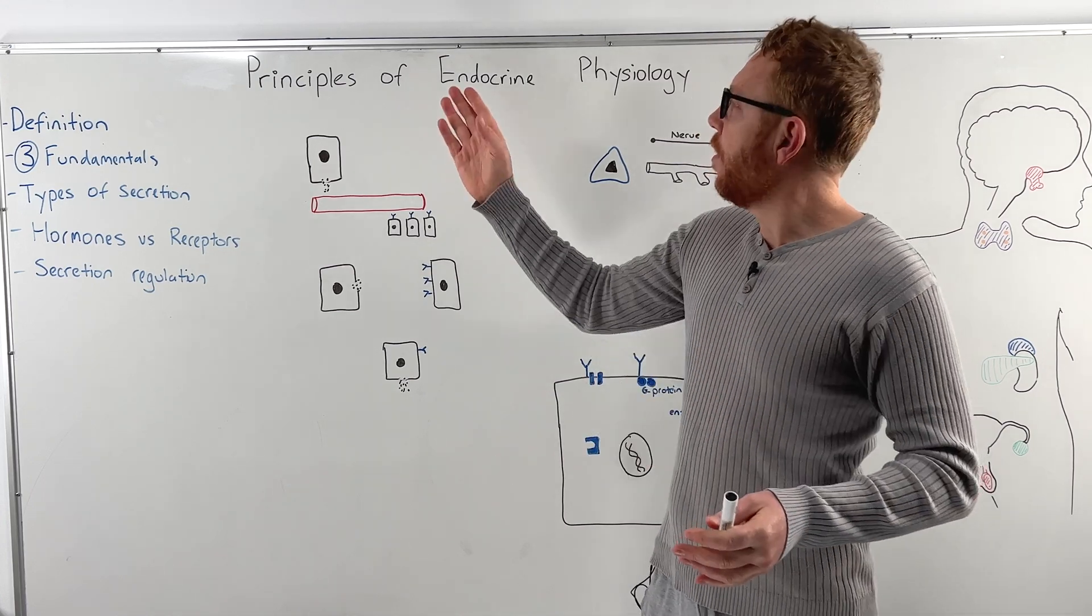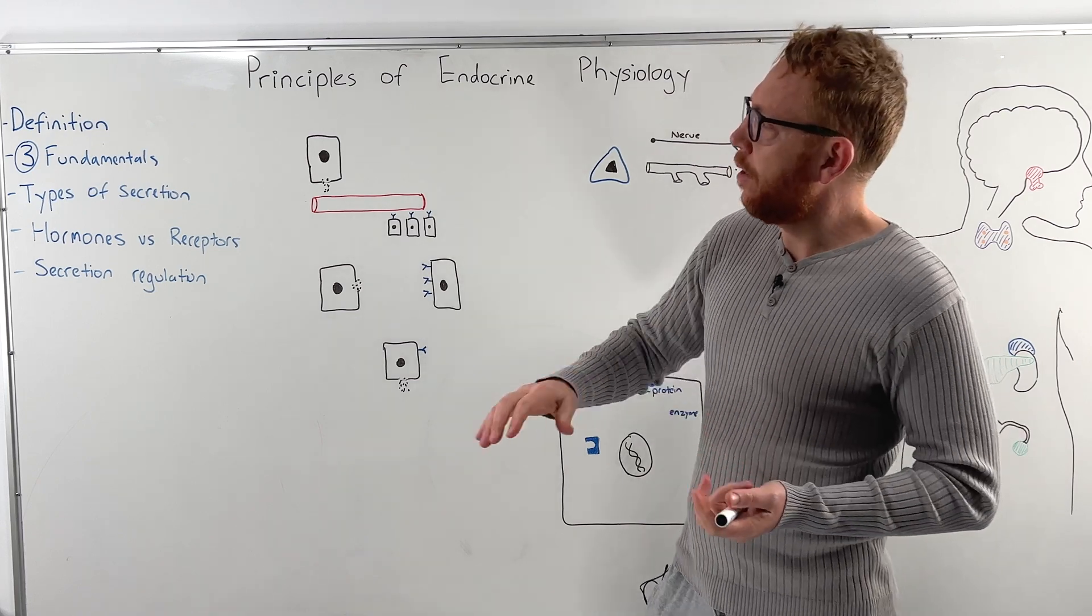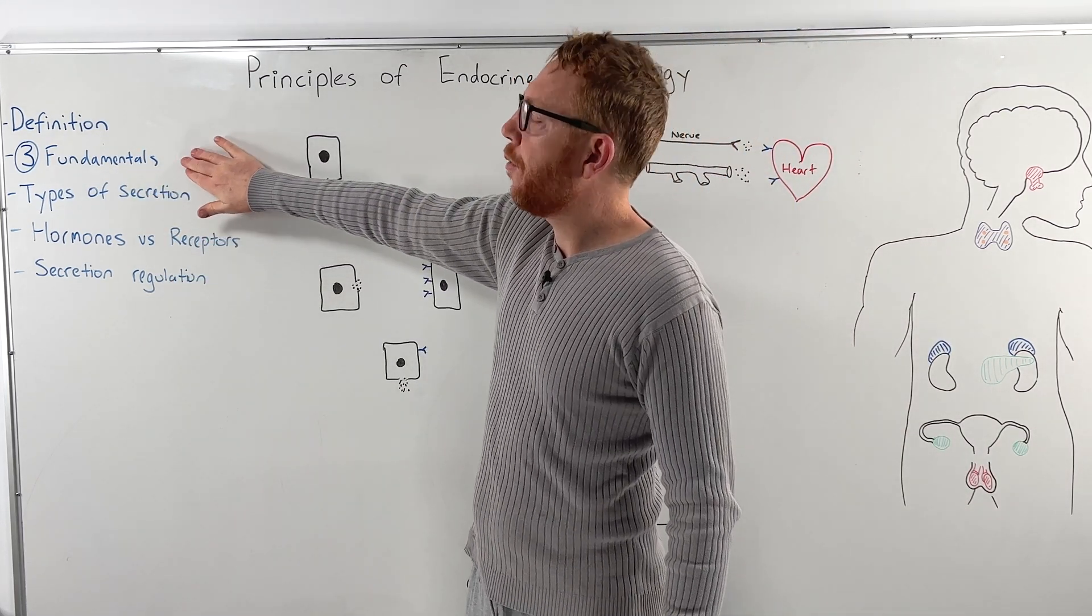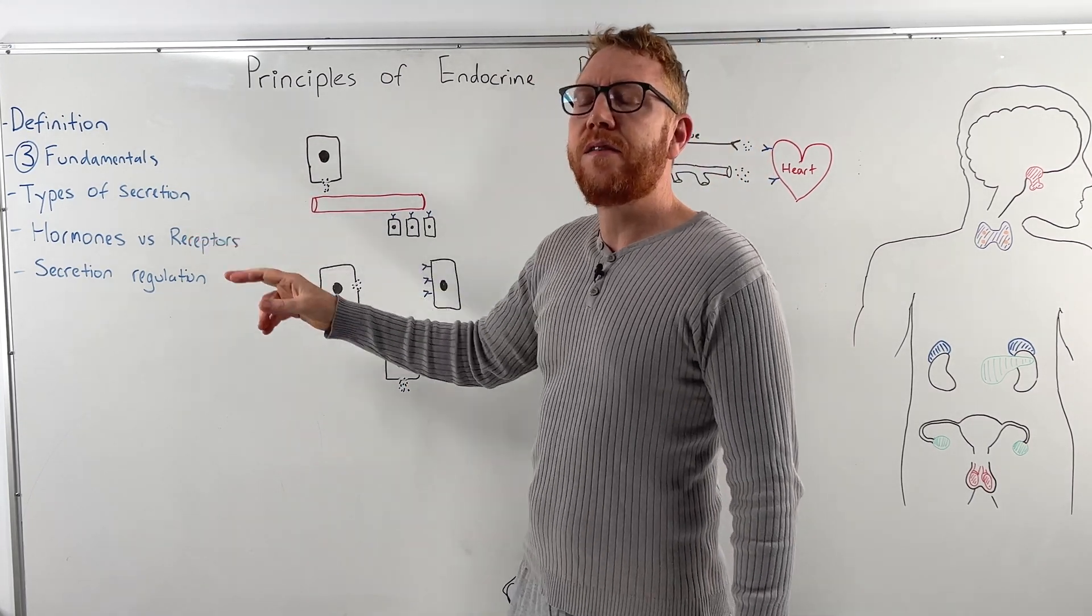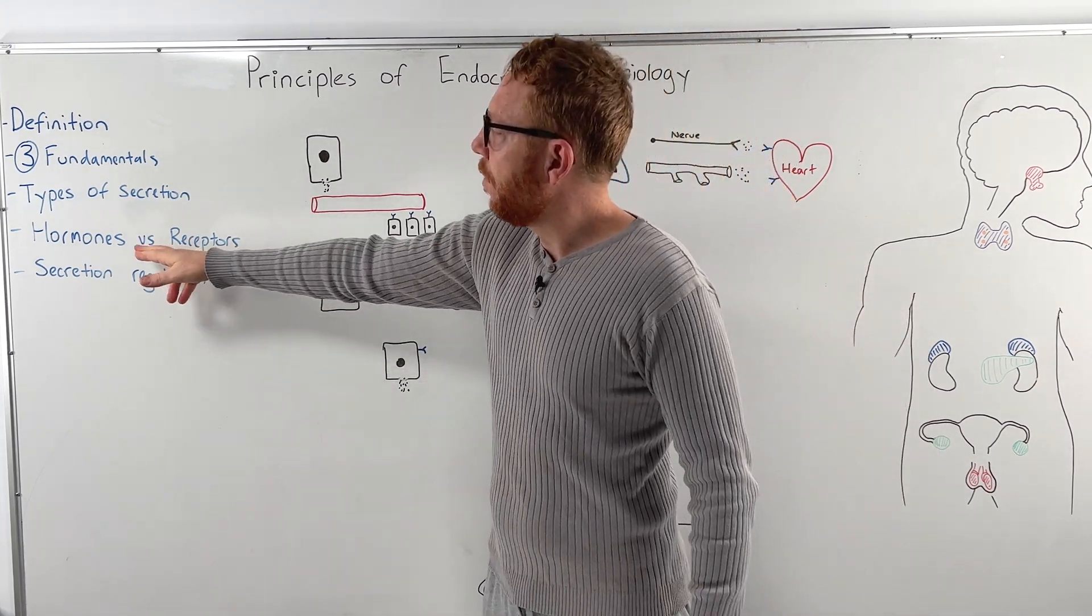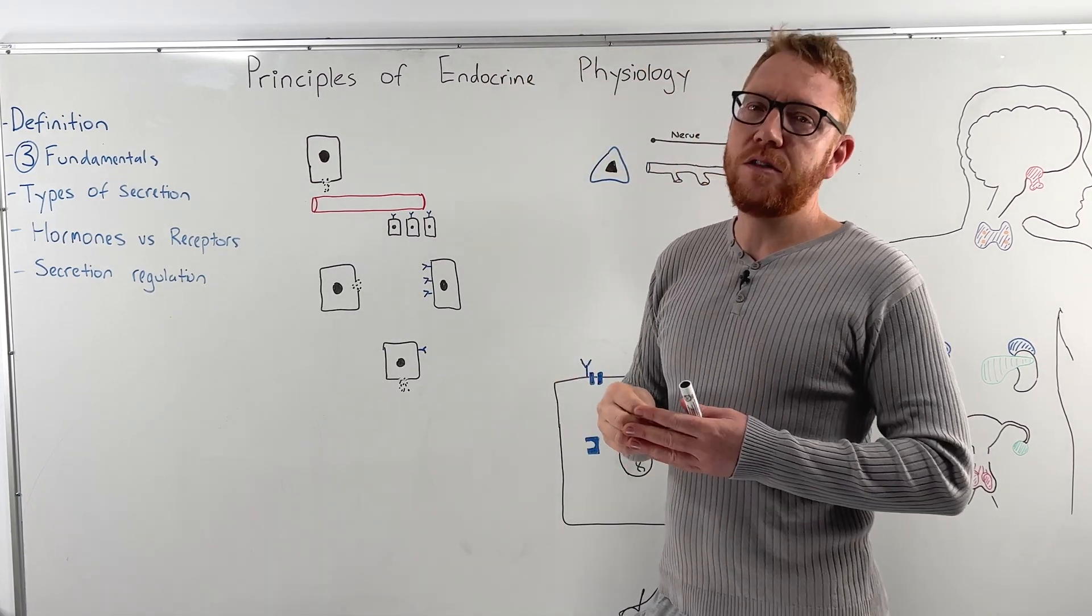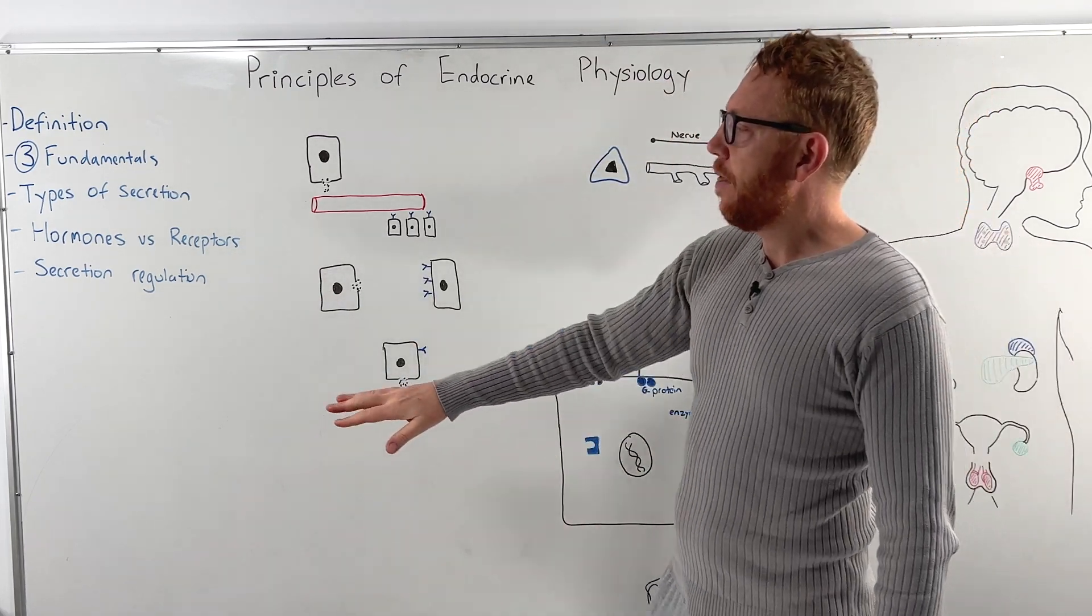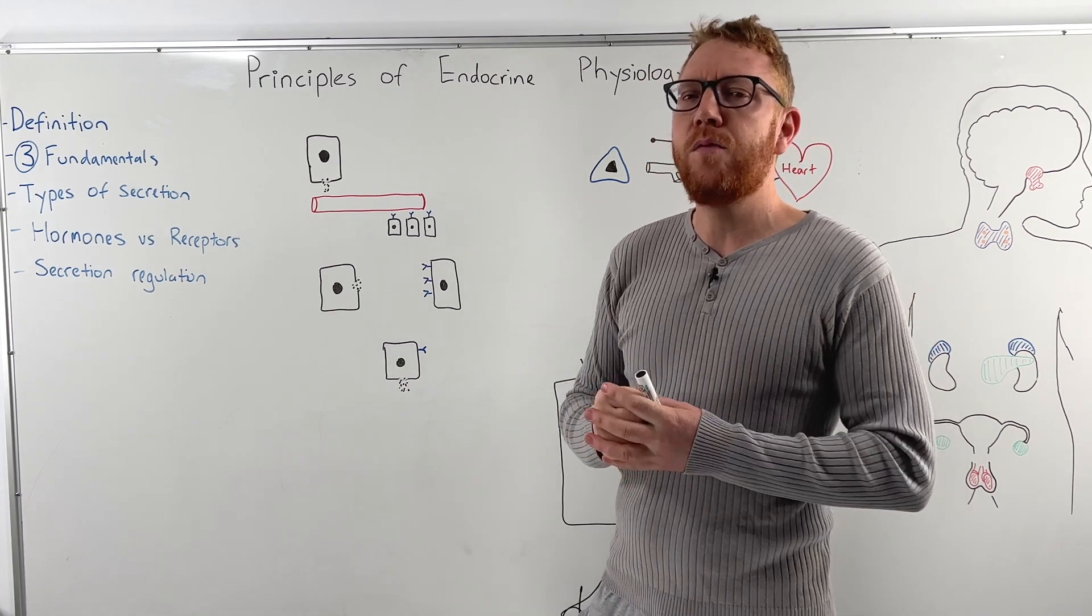Hi everyone and welcome to this video on the principles of endocrine physiology. In this video we're going to cover a few things. Firstly we'll get a definition of what endocrine means. We'll look at the three fundamentals that are associated with endocrine tissue. We'll look at the different ways that endocrine cells or tissue secretes their hormone. Then moving to the hormone itself. So we'll look at the three main categories or at least chemical categories of hormones and the receptors that they bind to. And then finally we'll see how does the body regulate secretion of hormones within the body.